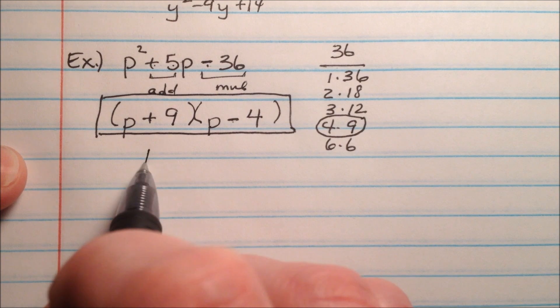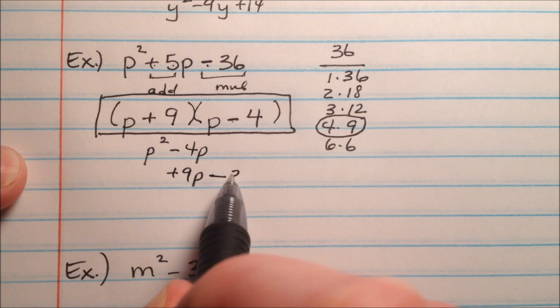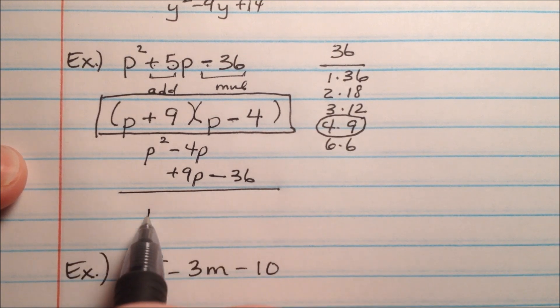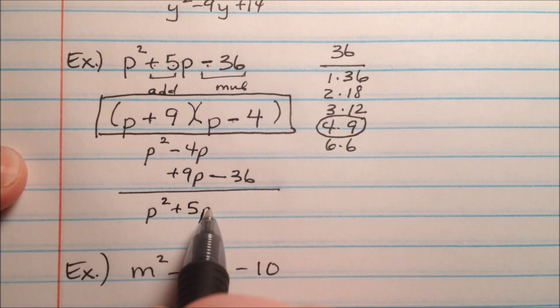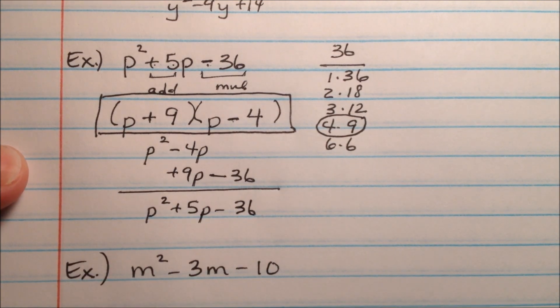And again, let's go ahead and foil it out. P squared minus 4p and positive 9p minus 36. We'll get p squared plus 5p minus 36. And again, yeah, that's what we started with.